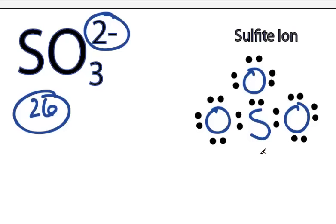And then we have two left over. We'll put them right here on the central atom. So we've used all 26 valence electrons. And the structure looks pretty good. Each of the atoms has an octet. We've used the 26 valence electrons. So this is a possible structure for the sulfite ion, SO3 2-.